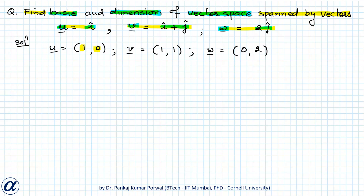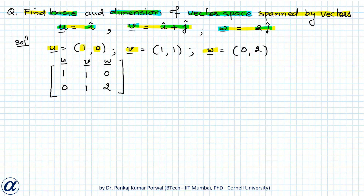To find the number of linearly independent vectors among u, v, and w, I will use the matrix rank method, where the given vectors form the columns of our matrix. So u forms the first column (1, 0), v forms the second column (1, 1), and w forms the third column (0, 2). The rank of a matrix equals the number of linearly independent columns, so the rank of this matrix equals the number of linearly independent vectors among our given vectors. Since it is a small matrix of size 2×3, I will use the minor method to find the rank.